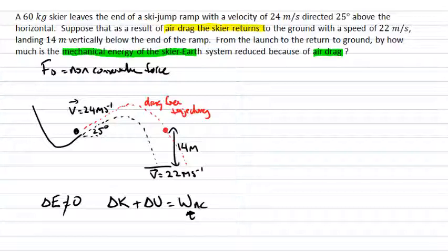It's the difference between the initial mechanical energy and the final mechanical energy. So let's start off by doing our evaluation here. Our change in kinetic energy is the final kinetic energy minus my initial kinetic energy plus my final potential energy minus my initial potential energy, and that's going to be equal to that work done by the drag force.